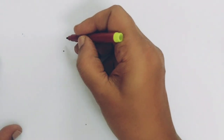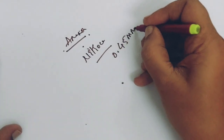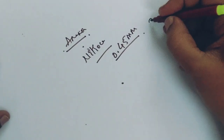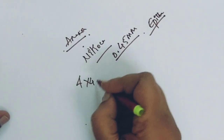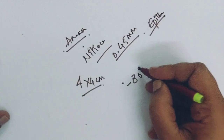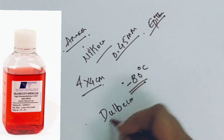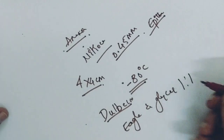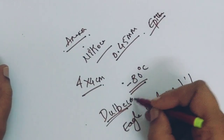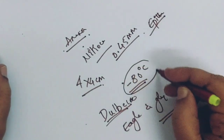Then the amniotic membrane is separated from the chorion. The amniotic membrane is placed over a nitrocellulose paper with a pore size of 0.45 mm, with the epithelium facing up. This nitrocellulose paper is then cut into 4 x 4 cm sizes and stored in Dulbecco's medium, which contains DMEM and glycerol in the ratio of 1:1, at minus 80 degrees centigrade.